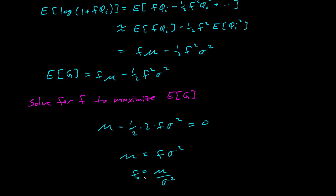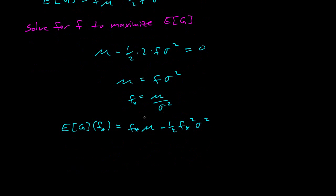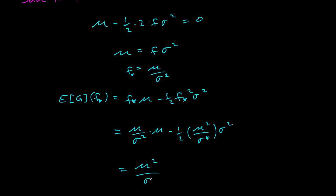So we have μ equals f·σ squared. So f equals μ over σ squared. We'll call that f* to be the Kelly criterion fraction. And our expected growth at f* is what? It's f*·μ minus 1 half f* squared σ squared, equals μ over σ squared times μ minus 1 half μ squared over σ to the fourth. This is the f* squared σ squared. So that's μ squared over σ squared minus 1 half μ squared over σ squared. And so we just get 1 half μ squared over σ squared.